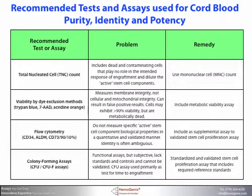A problem with total nucleated cell count is that it includes dead and contaminating cells that play no role in the intended response of engraftment and actually dilute the active stem cell components. A remedy for this would be to use the mononucleated cell count instead of the TNC count.